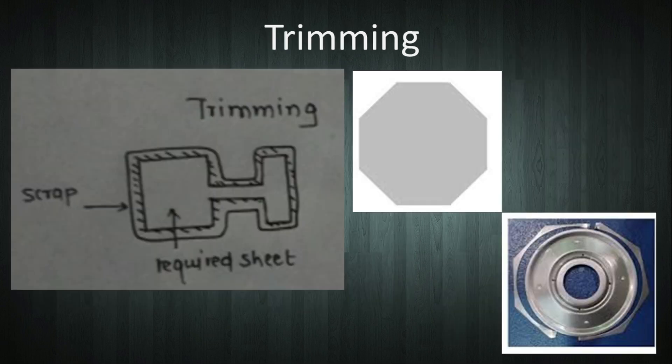The next operation is trimming. Trimming is cutting away excess material from sheet which is already formed. Here, the extra material is cut down. Also from this blank, this extra material is cut down to form this disk. It is trimming.